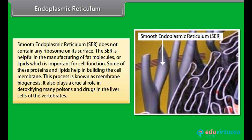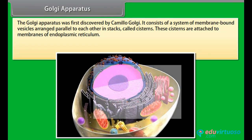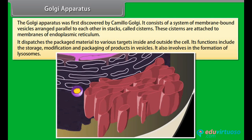SER also plays a crucial role in detoxifying many poisons and drugs in the liver cells of vertebrates. The Golgi apparatus was first discovered by Camilo Golgi. It consists of a system of membrane-bound vesicles arranged parallel to each other in stacks called cisterns. These cisterns are attached to membranes of the endoplasmic reticulum. It dispatches packaged material to various targets inside and outside the cell.